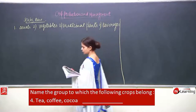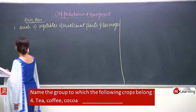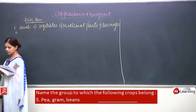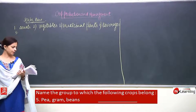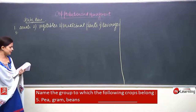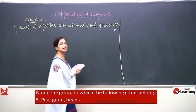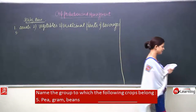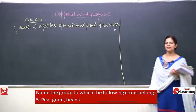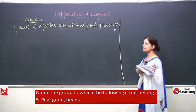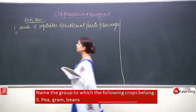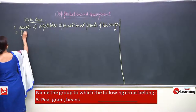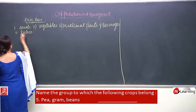The fifth one — the last one. This is pea, gram, and beans. So these are pulses.